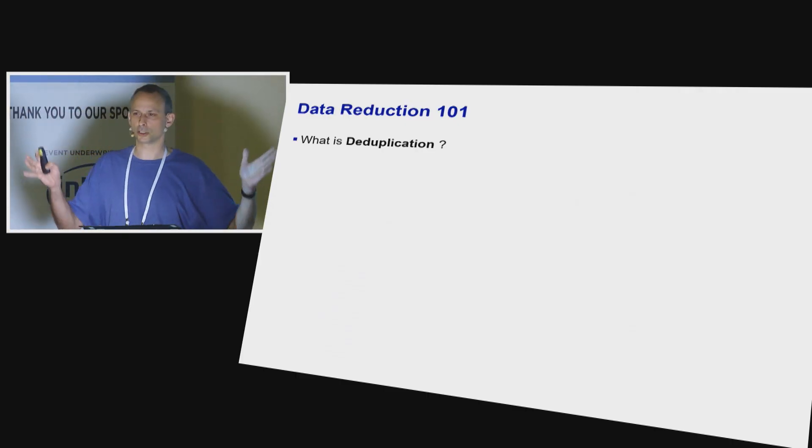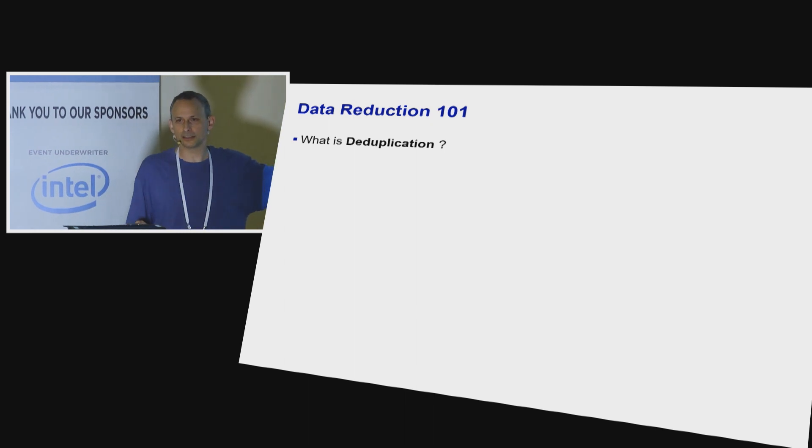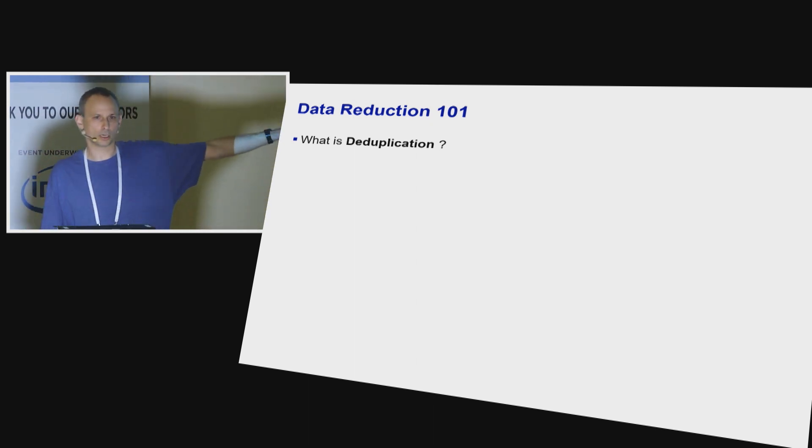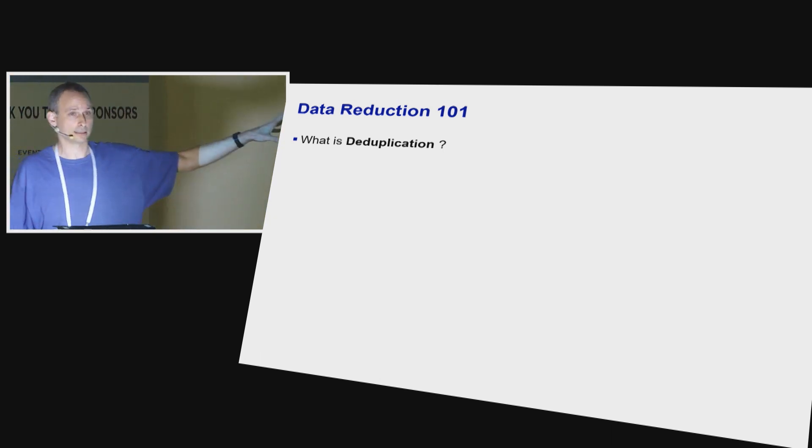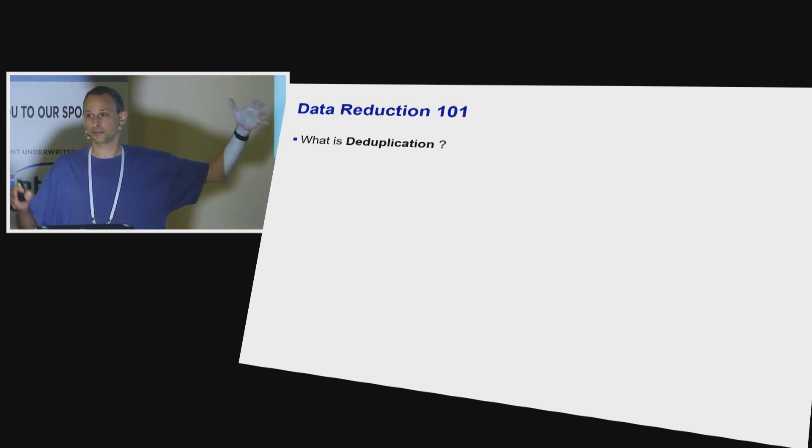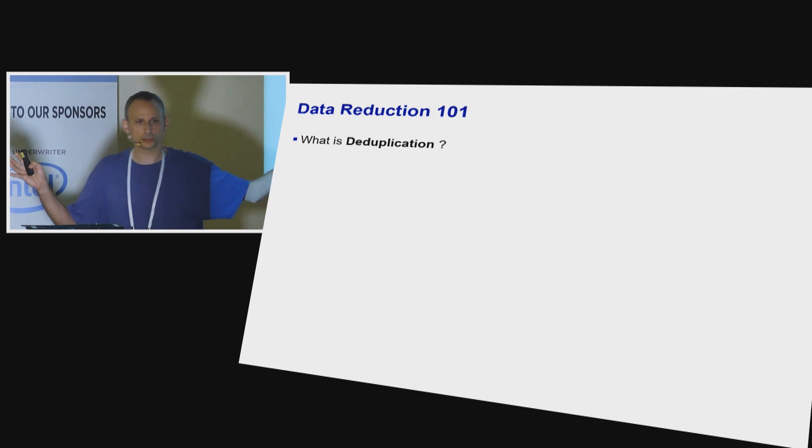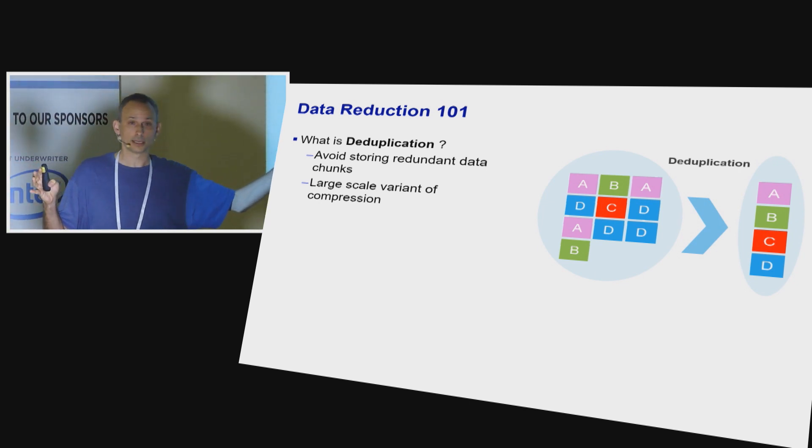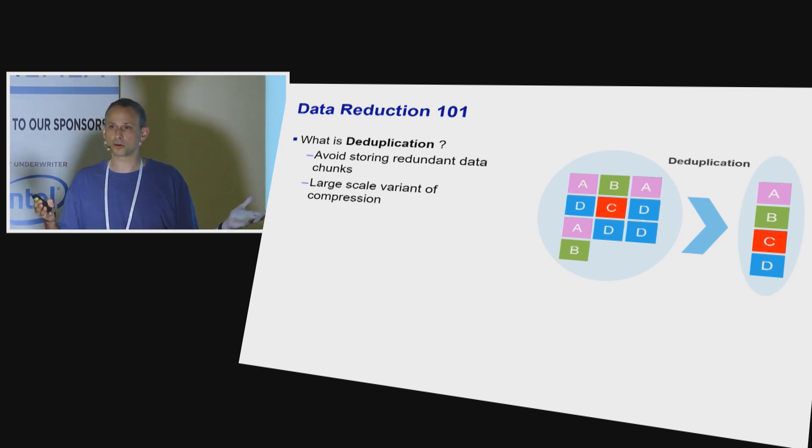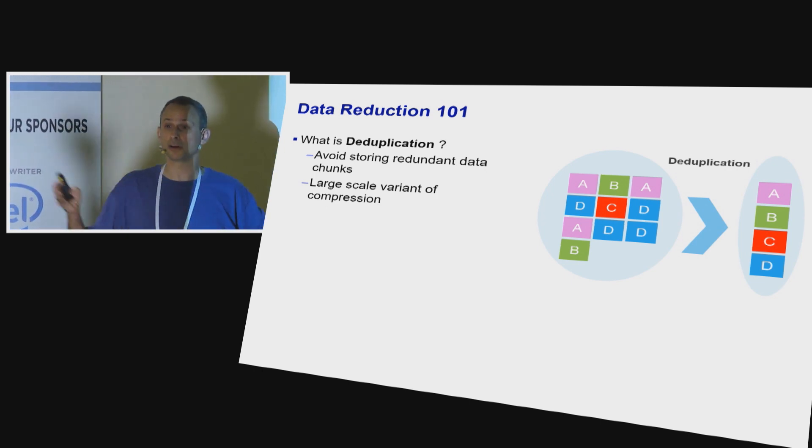So let's start with data reduction in general. Deduplication is the art of taking very large amounts of storage and identifying repetitions at a large scale, large chunks. So large would be 8K, for example, and avoiding replicating these over and over again. So it's a form of compression, but at a very large scale.